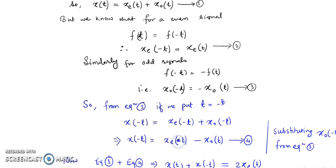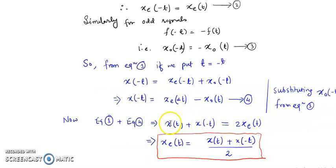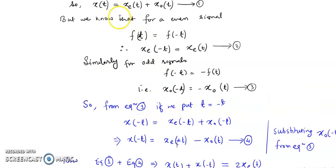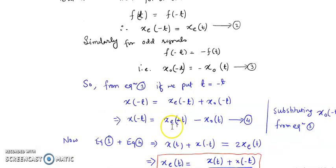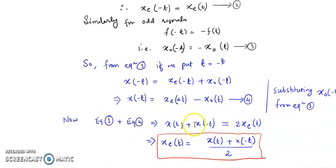So Xo(-t) becomes -Xo(t), giving us equation 4: X(-t) = Xe(t) - Xo(t). Now adding equation 1 and equation 4, X(t) + X(-t) = 2Xe(t), since the Xo(t) terms cancel. Therefore, Xe(t) = [X(t) + X(-t)] / 2. This is the even component of the signal.